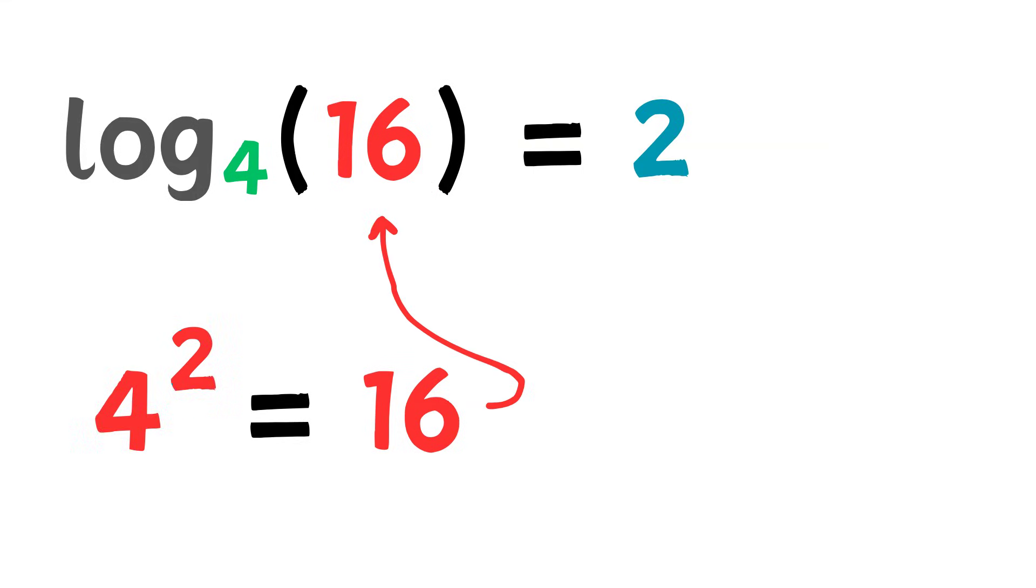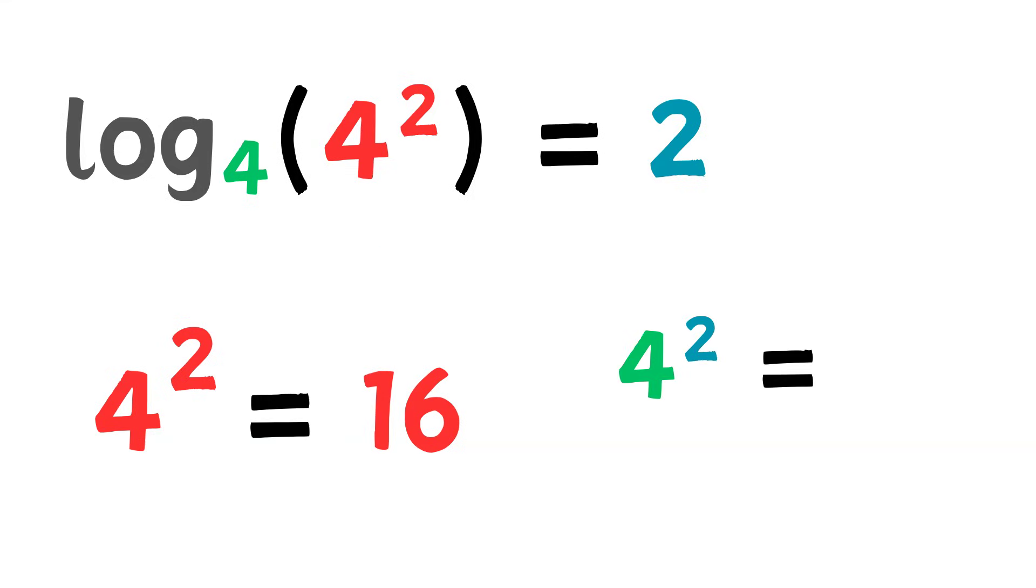If we rewrite 16 as 4 to the power of 2, now we can see it clearly. 4 to the power of 2 equals 4 to the power of 2, 16.